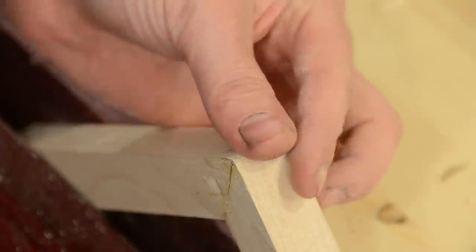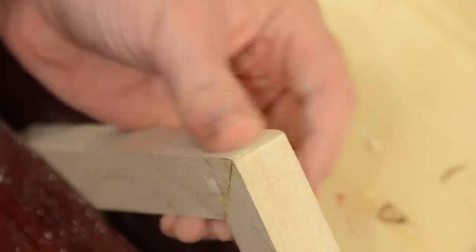And so that's how you would fix a bad corner on a miter joint. Thank you for watching.